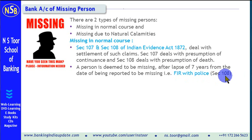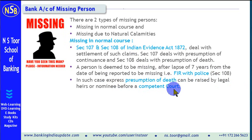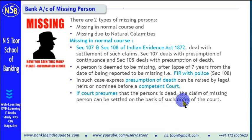This is the provision of Section 108. In such cases, the legal heirs or the nominee of that particular person can approach a competent court and raise an expressed presumption of death. If a court presumes that the person has died, then the court will issue an order or a certificate of death, and based on that, the claim of the missing person's account can be settled.